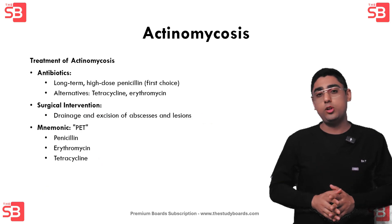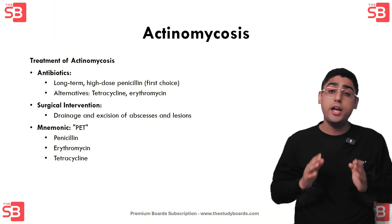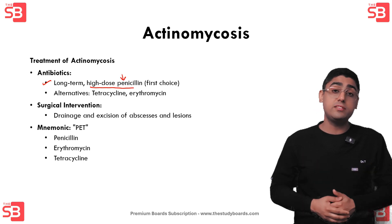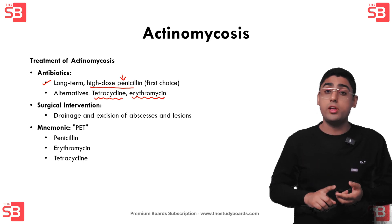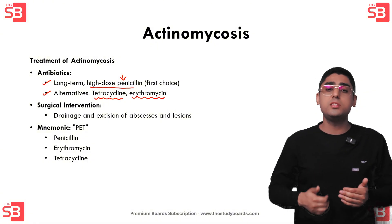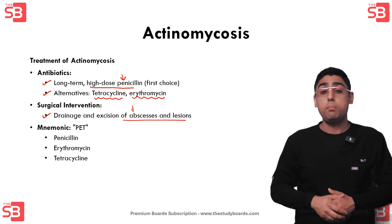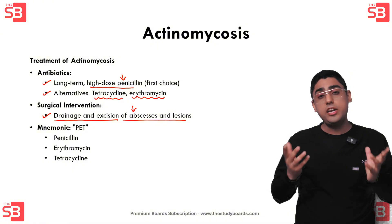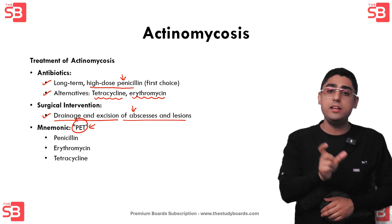The primary treatment for actinomycosis is long-term, high-dose penicillin. For patients allergic to penicillin, alternatives like tetracycline or erythromycin can be used. In some cases, surgical intervention such as drainage and excision may also be necessary. To remember the treatment options, use the mnemonic PET — Penicillin, Erythromycin, and Tetracycline.